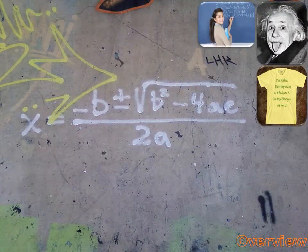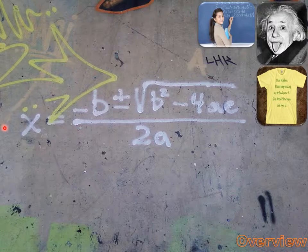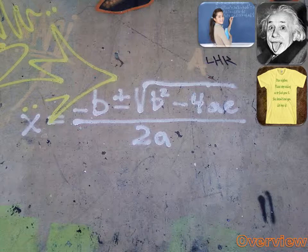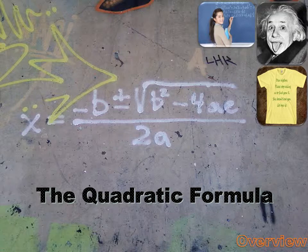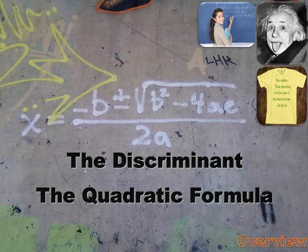In today's lesson, we're going to study this formula that's up on the screen: x equals minus b plus or minus the square root of b squared minus 4ac all over 2a. That's known as the quadratic formula. Before this lesson's over, you're going to understand the quadratic formula and how to use it, and you're also going to understand what a discriminant is and how to use that.